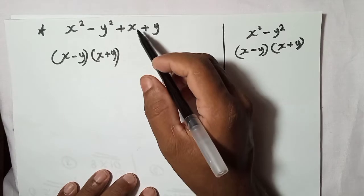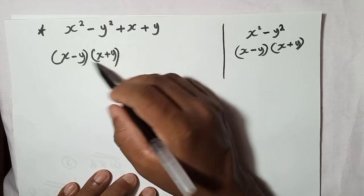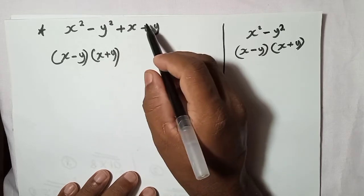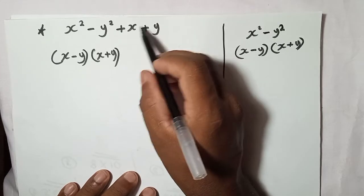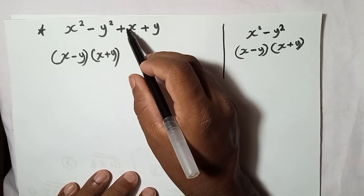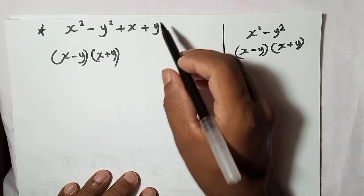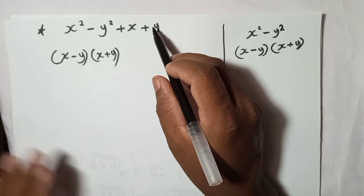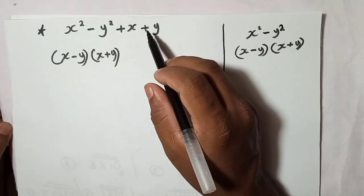Now you need to notice — here we have x plus y, and here also we have x plus y, but it is not inside a bracket as one term. So for both parts we need to find a common thing. There is no obvious common thing, but we can think of it as one times x and one times y, so one will be common for both.